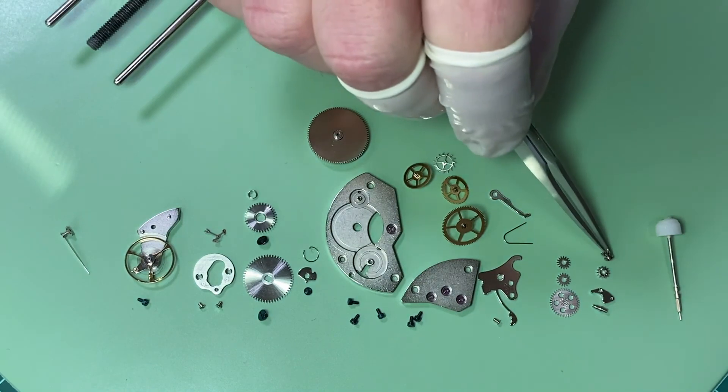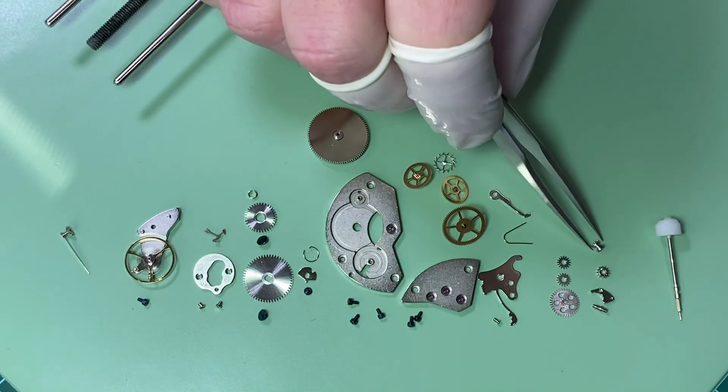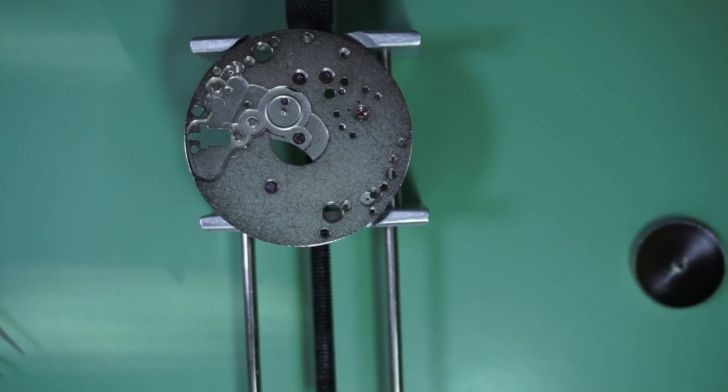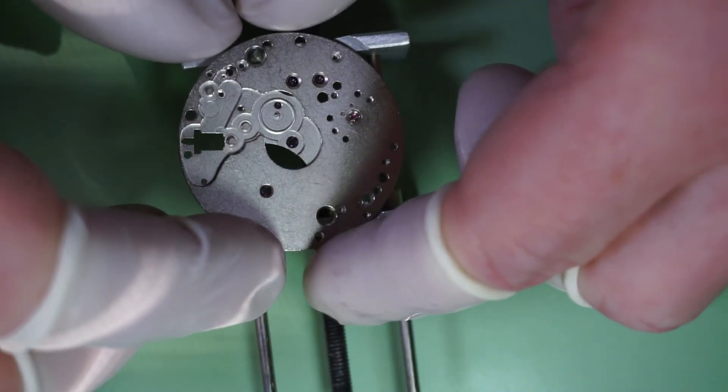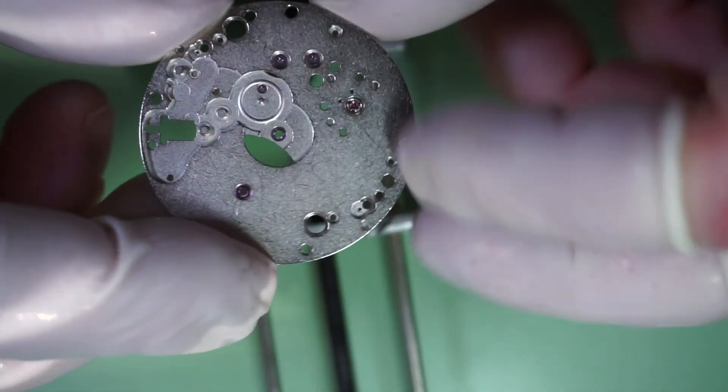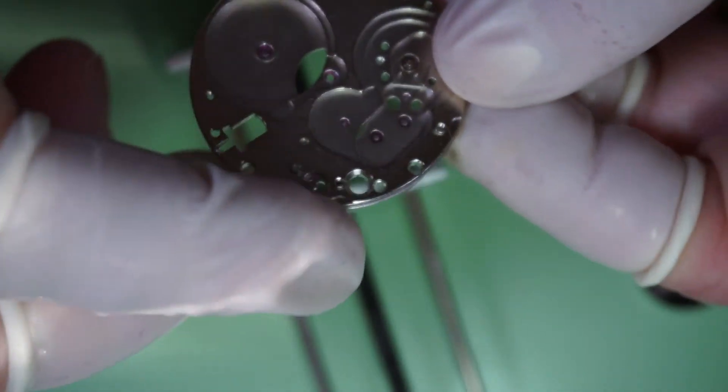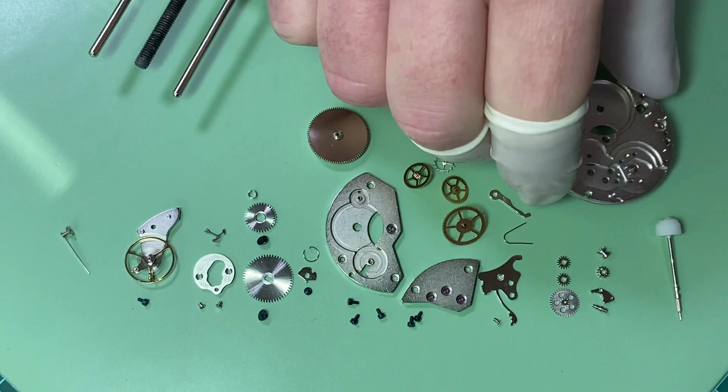And with that removed, the entirety of the movement is disassembled. And we are left with only the base plate, which contains the jewels.